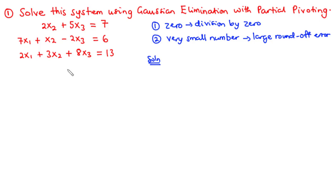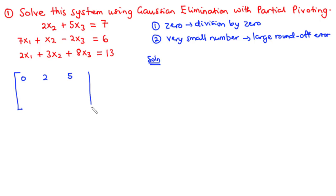We have a system of three equations with three unknowns. As we know from the previous lesson, the first thing we are going to do is represent this system in augmented form, writing down the coefficients of x1, x2, and x3. For the first equation the coefficient of x1 is zero, x2 is two, x3 is five, and the right-hand side is seven. Completing the augmented matrix we get: [0, 2, 5 | 7], [7, 1, -2 | 6], [2, 3, 8 | 13].